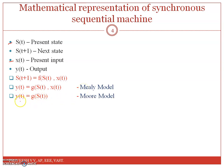In the Moore model, output is a function of present state only. In the case of the Mealy model, output will be a function of present state as well as the present input. But the next state is always a combination of present state and present input. So this is the basic classification.